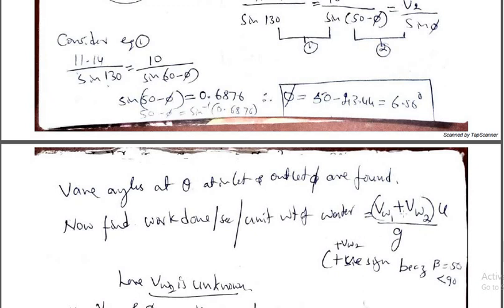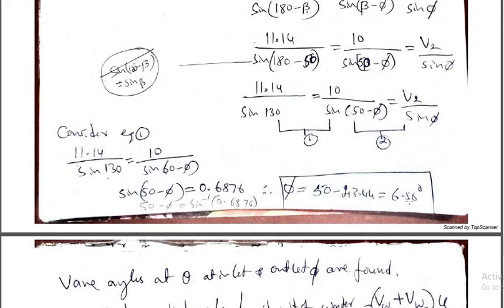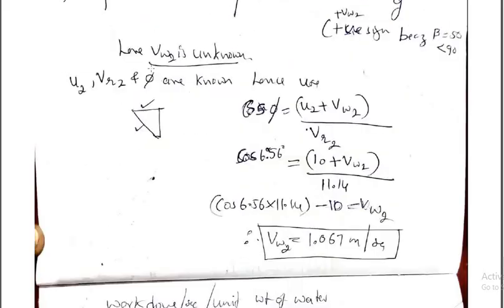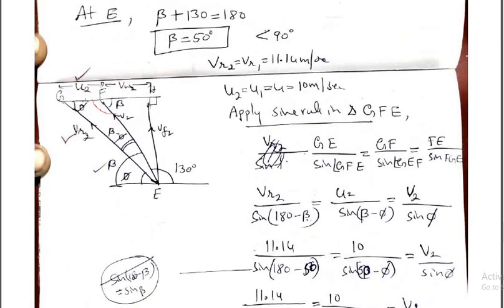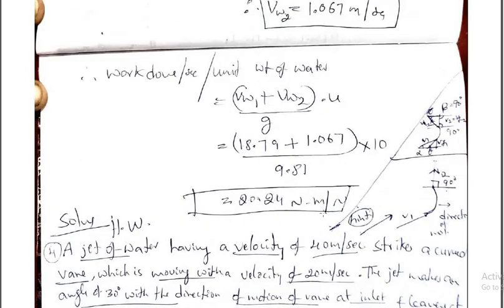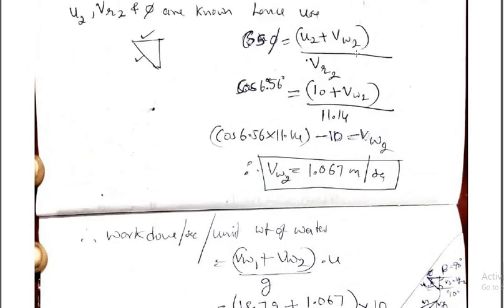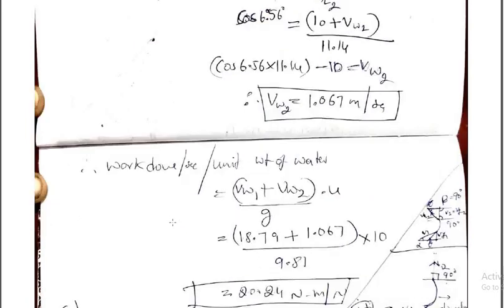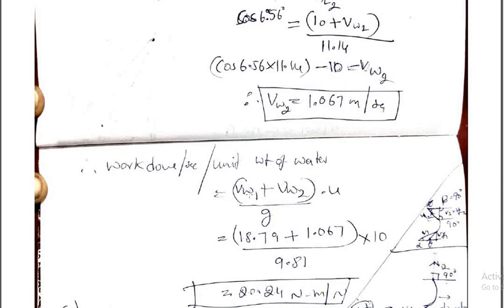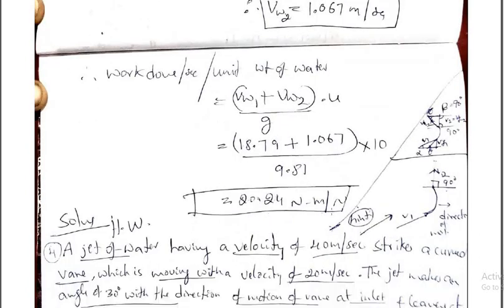Next, find the work done. We need Vw2. In the outlet triangle, we know U2, Vr2, and beta. Apply cos phi equals (U2 plus Vw2) divided by Vr2. Substituting values, Vw2 equals 1.067. Work done per second per unit weight of water is (Vw1 plus Vw2) times U divided by G. Here I use the plus sign because beta is less than 90 degree. Substitute and you will get the answer in Newton meter per Newton.